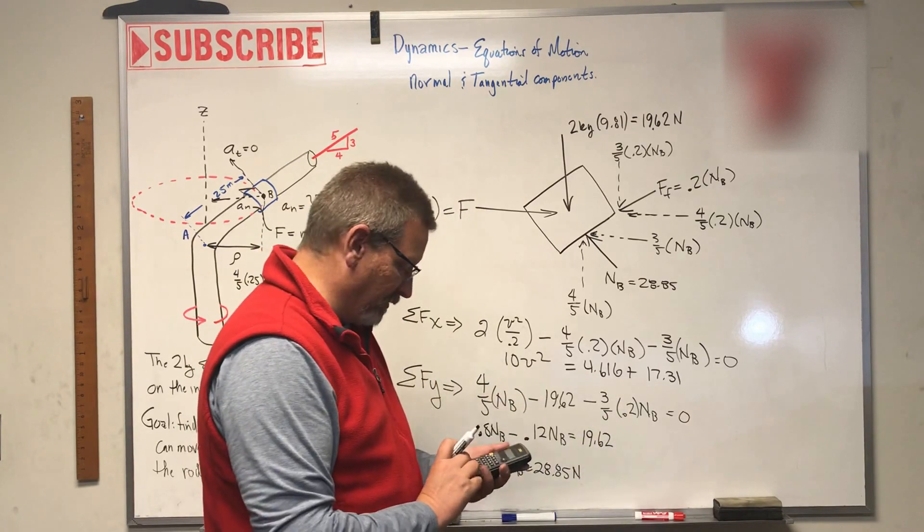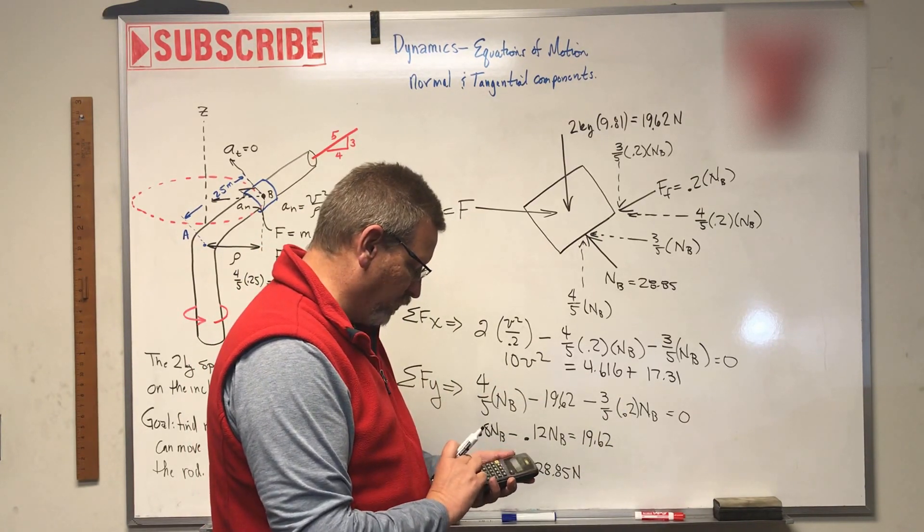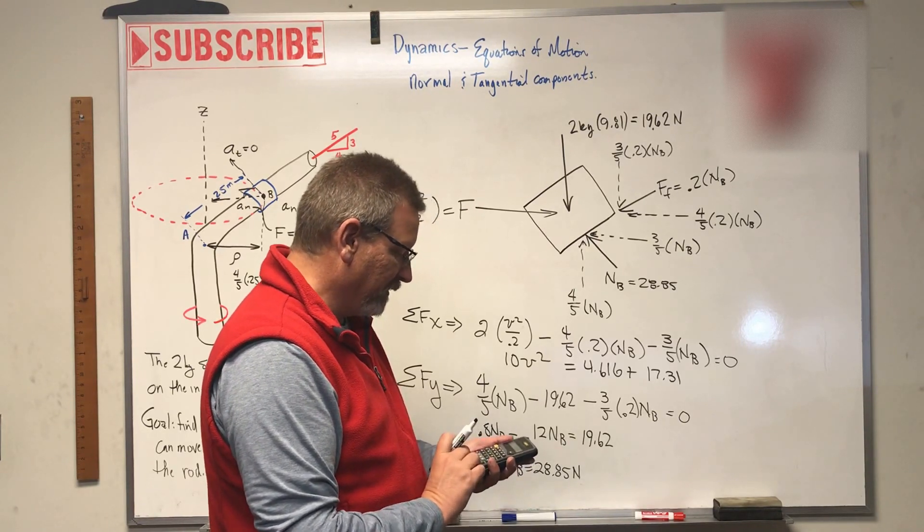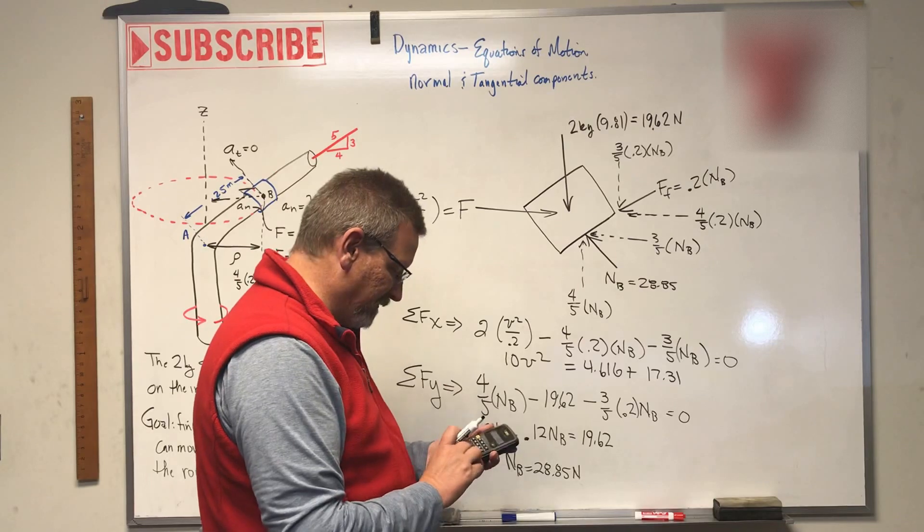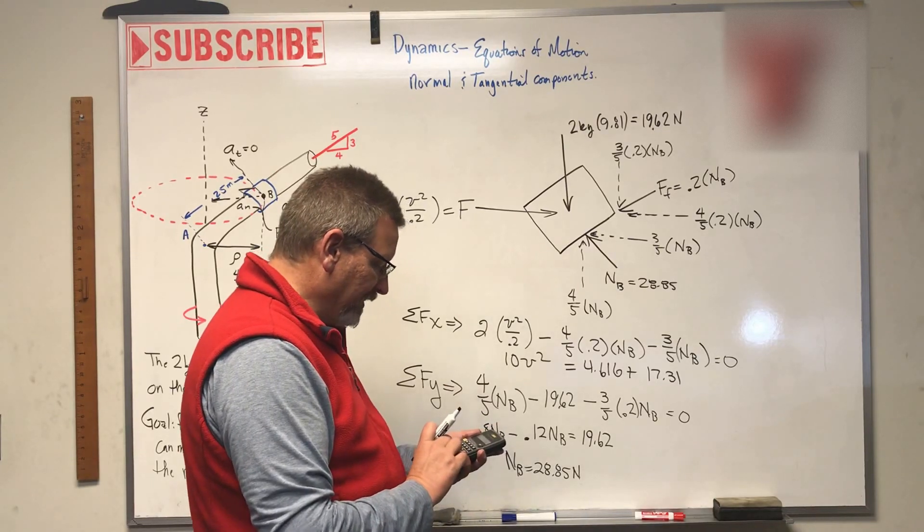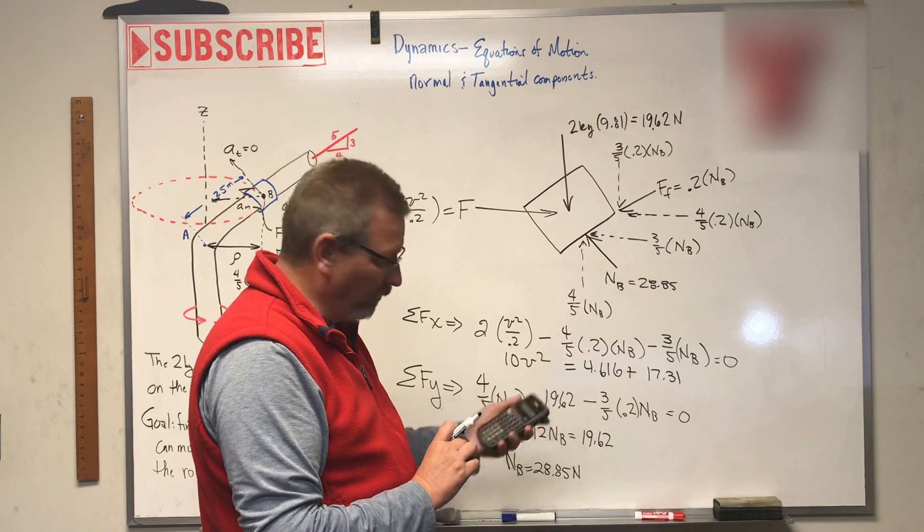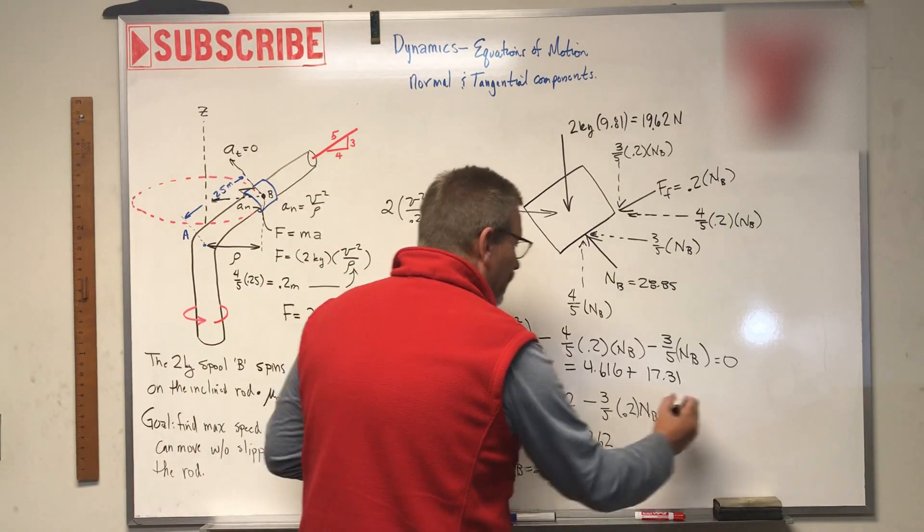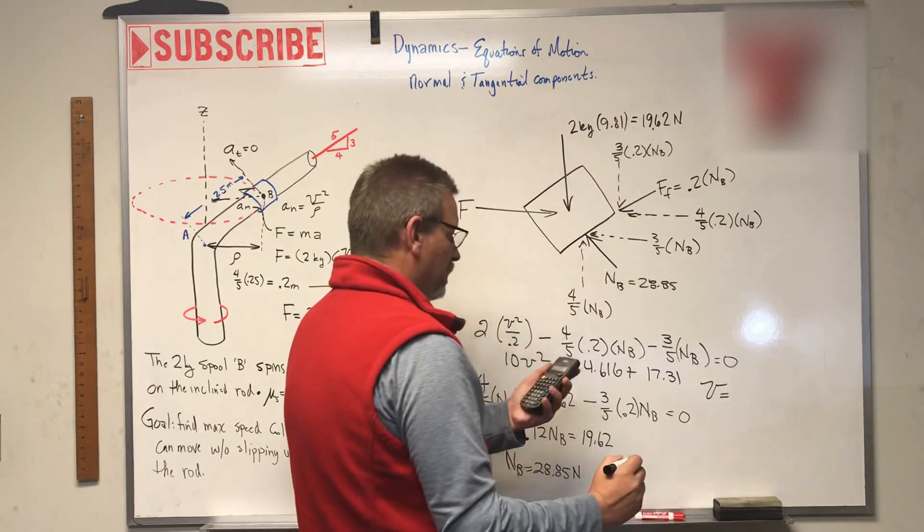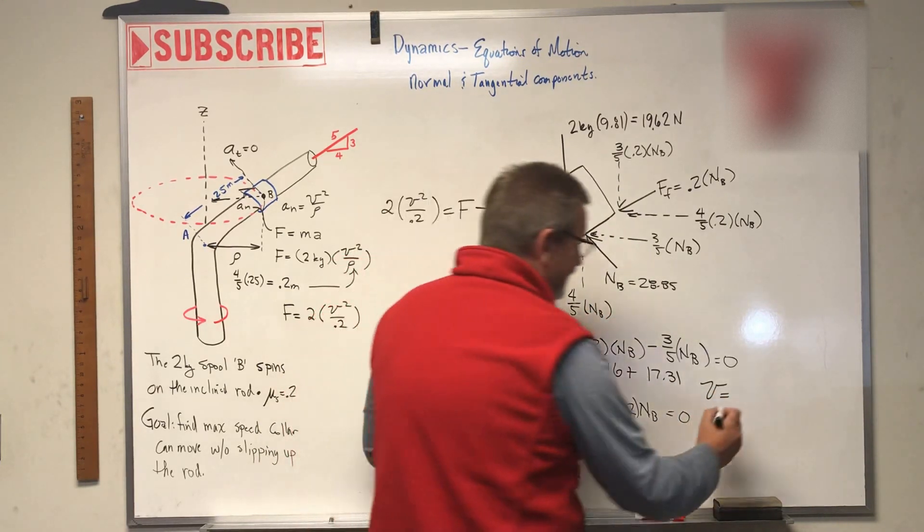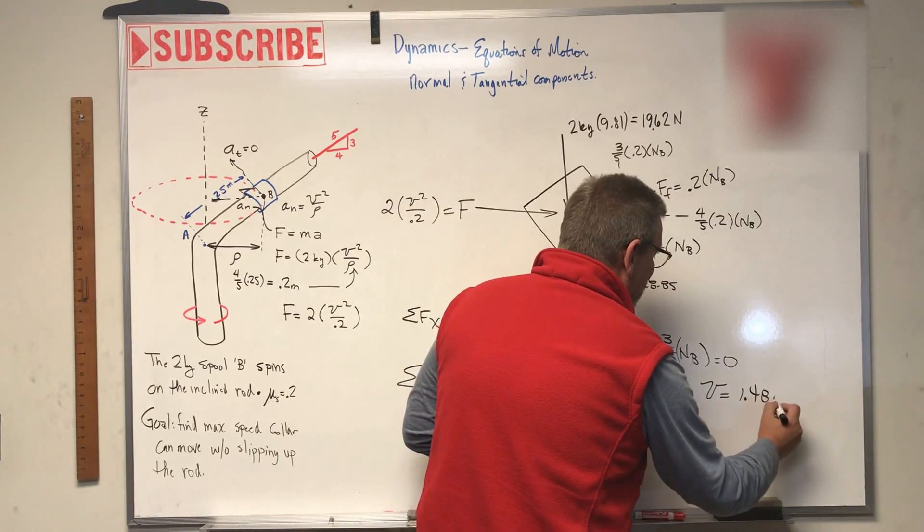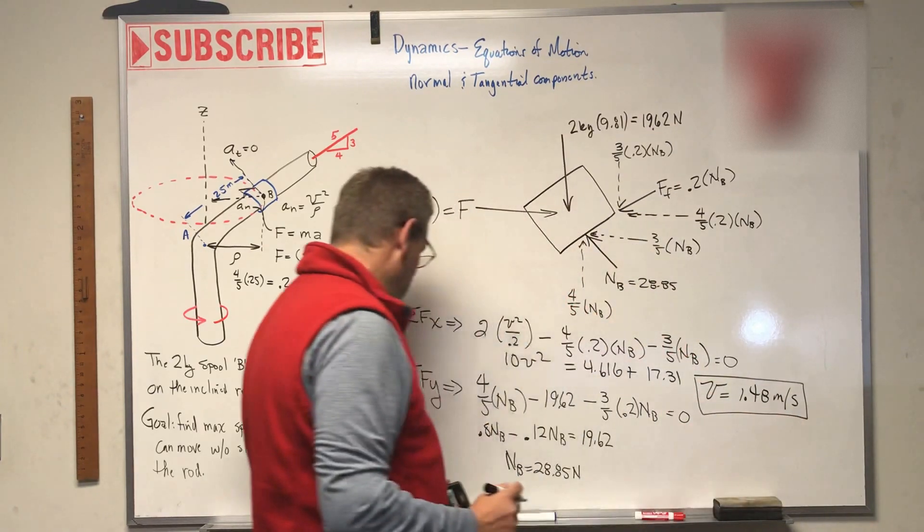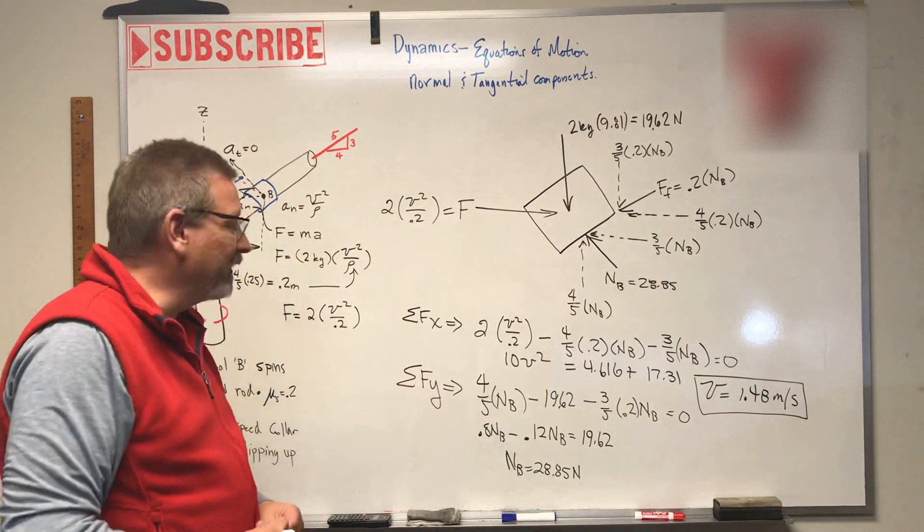So let's just add those two together. 4.616 plus 17.31 is 21.92 divided by 10 equals, and then that's squared. So I've got a square root the whole thing. And there's my answer. So V is equal to 1.48 meters per second. All right. There you go.